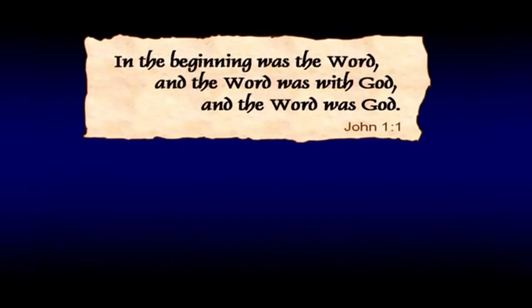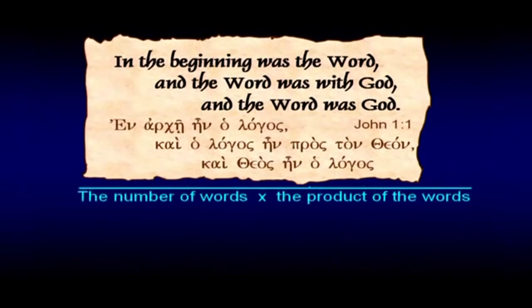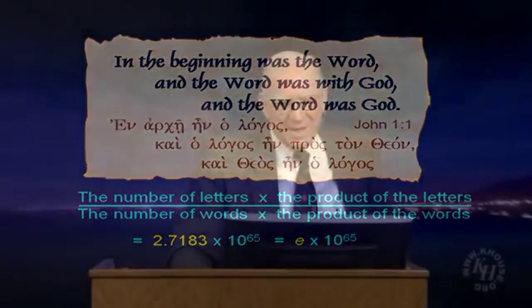We saw that Genesis 1:1 led to pi. Now let's take John 1:1 — 'In the beginning was the Word, the Word was with God, the Word was God.' If you take that in Greek, which also has a numerical value for each letter, and do exactly what we did with Genesis 1:1 — the number of letters times the product of the letters, divided by the number of words times the product of the words — you get E to four decimal places. That's astonishing. My rabbinical friends will tell me that coincidence is not a kosher word. This is the kind of signpost that should wake us up to realize there is a marriage between the real creation and a message from our designer.